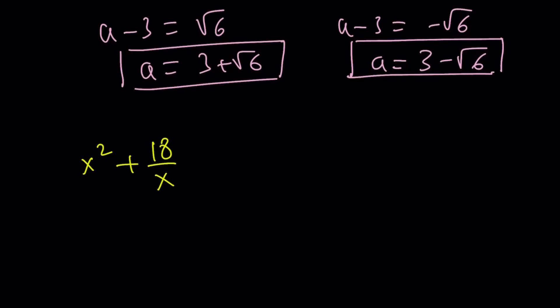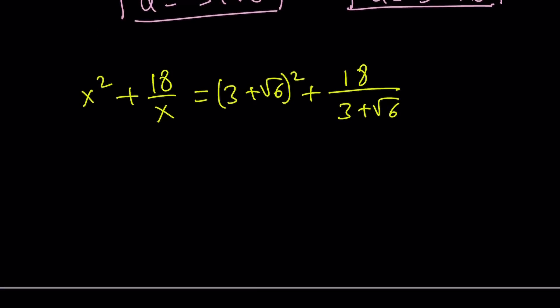So what happens if I replace a with 3 plus root 6? Let's find out. 3 plus root 6 squared plus 18 over 3 plus root 6. Let's simplify this expression. The first one is a perfect square, a plus b quantity squared. So we're going to go ahead and expand it. Hopefully you remember the formula. a plus b - I probably shouldn't use a here. Not x either. How about m plus n?